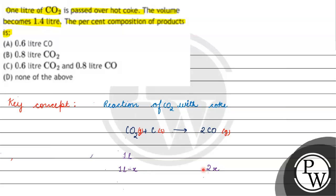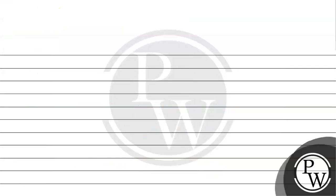Let's say x amount of CO2 reacts. Then carbon monoxide formed will be 2x. The final volume will be 1 minus x plus 2x, which equals 1 plus x. We will not consider the coke since it is solid.